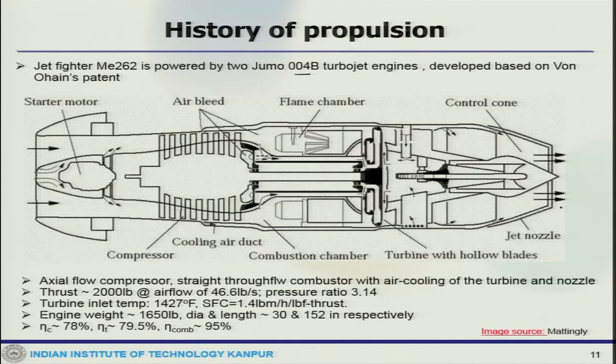The jet fighter ME 262 was powered by two Junkers Jumo 004B turbojet engines, developed based on Von Ohain's patent. The schematic shows a compressor, then the combustion chamber, turbine, and nozzle. It had an axial flow compressor, a straight-through flow combustor with air cooling of the turbine and nozzle, with a pressure ratio of around 3.14 across the compressor.